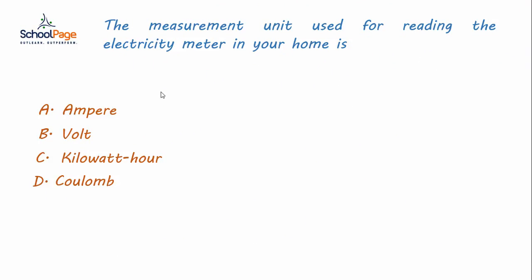Moving back to the question. The measurement unit used for reading the electricity meter in your home is option C, kilowatt-hour.